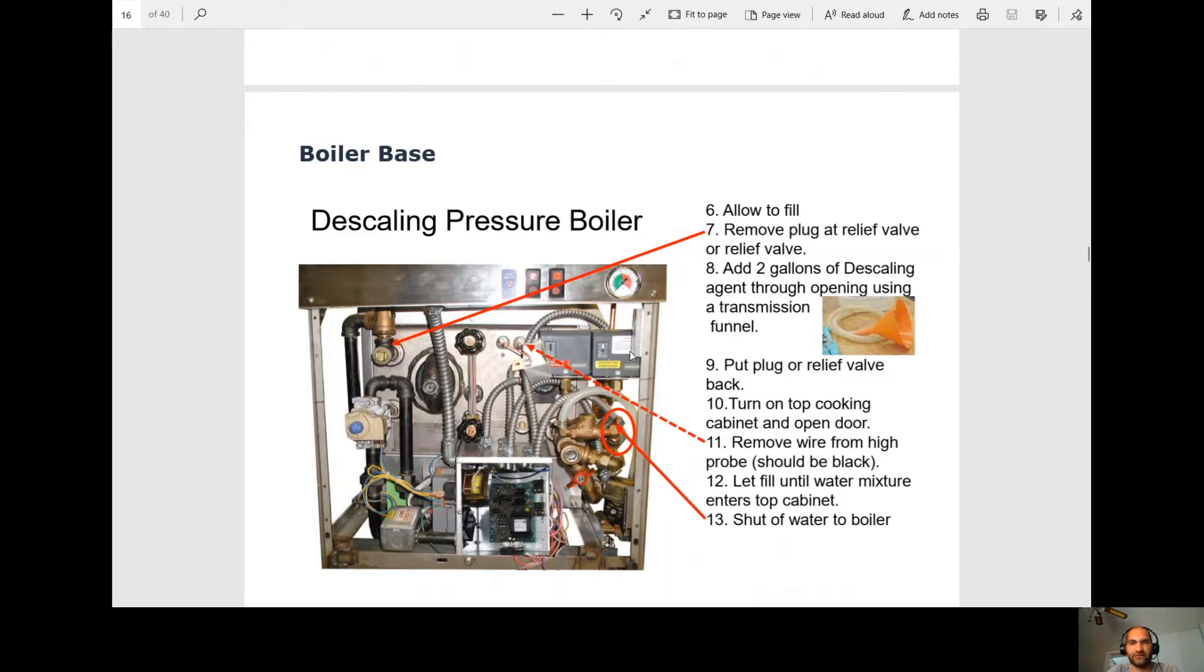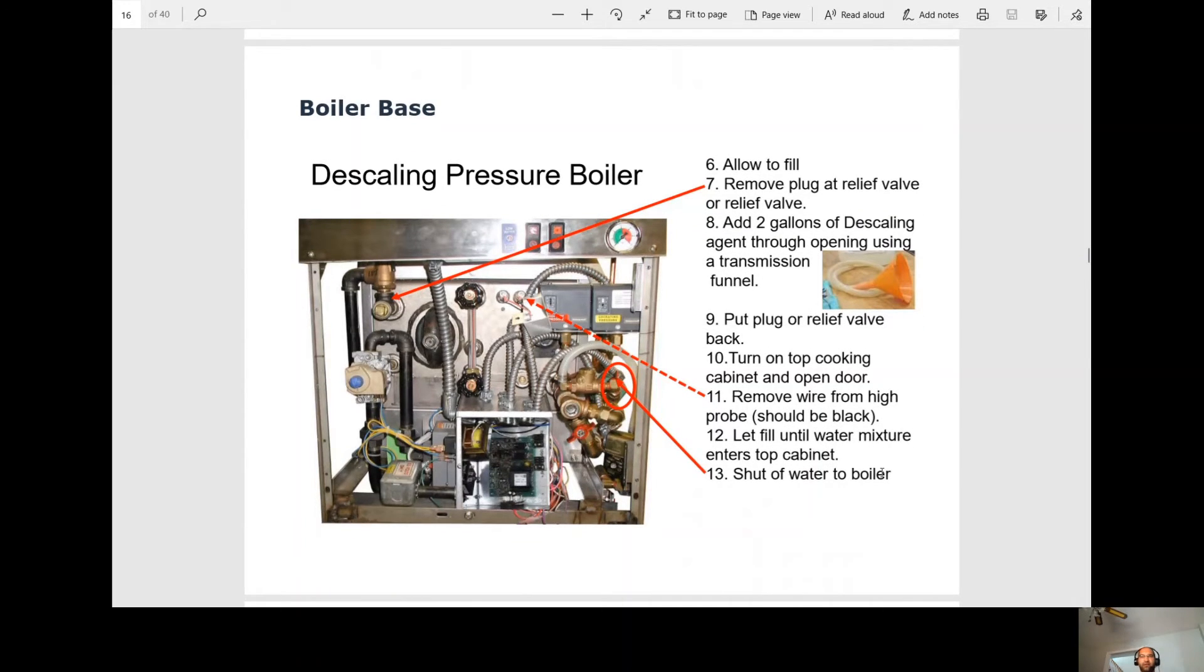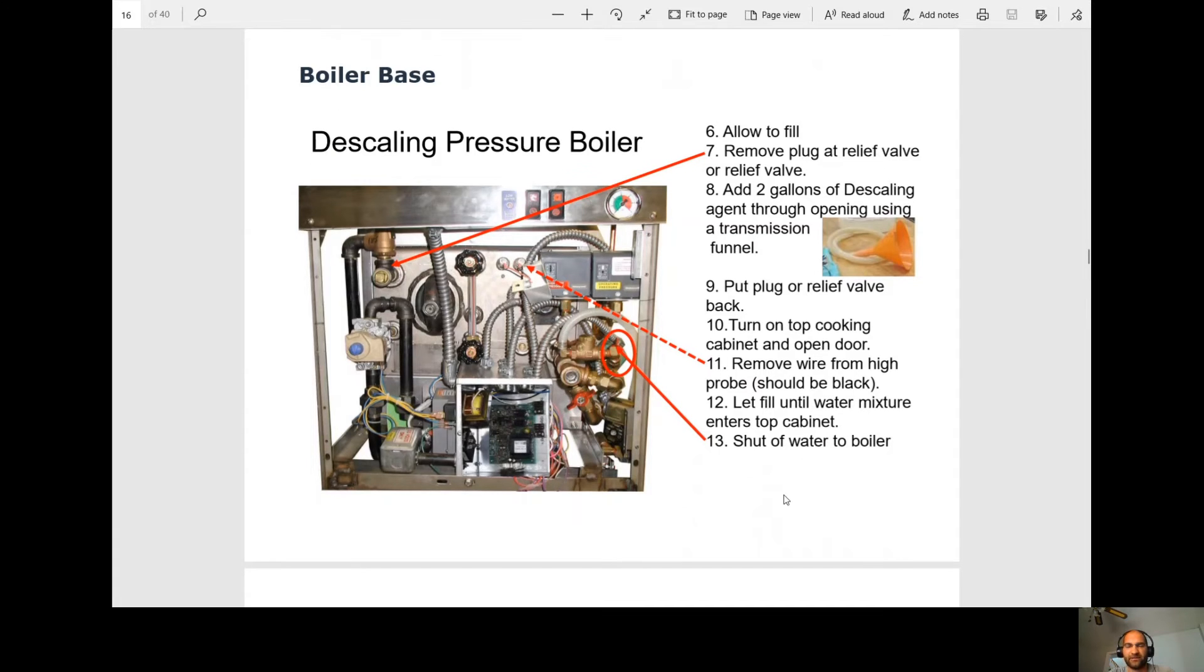Once it's full, you're going to remove this plug here at the pressure relief valve, and you're going to add two gallons of the descaling agent. It's recommended, obviously, to use a funnel here. At this point, if you have a cooking cabinet above it, you want to turn it on and open the door. And at this point, we're going to remove the high probe, the high water probe from the unit. It should be the black one. At this point, now you're going to let the unit fill until it enters the top cabinet. As soon as it enters the top cabinet, you want to turn off the water to the unit.